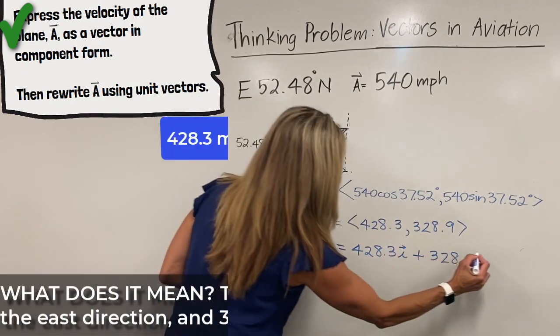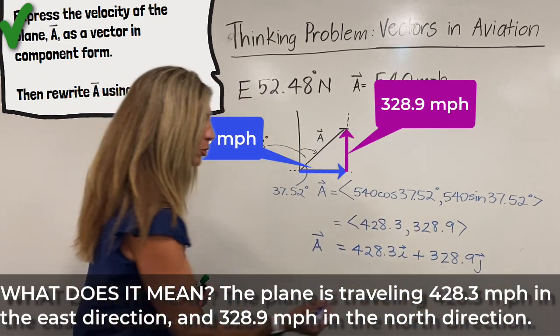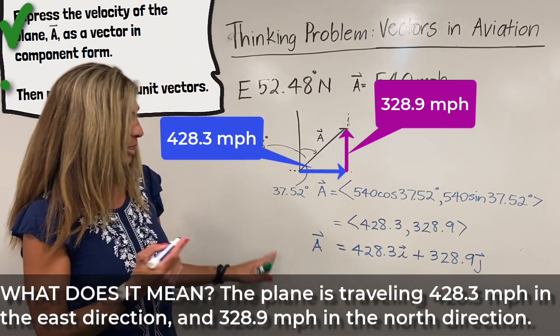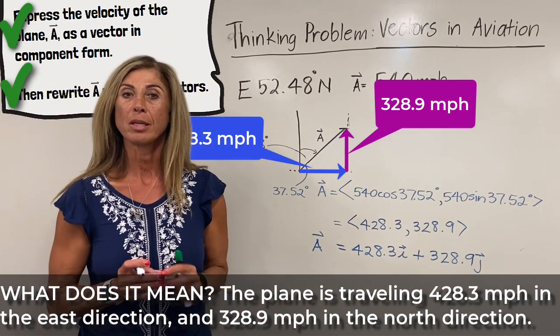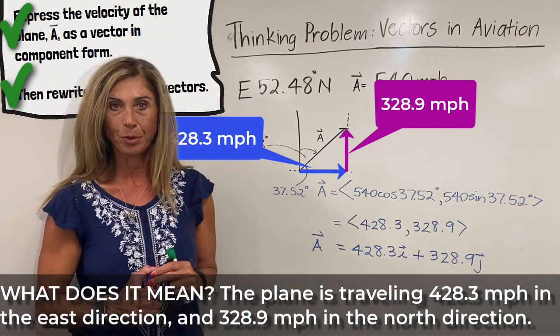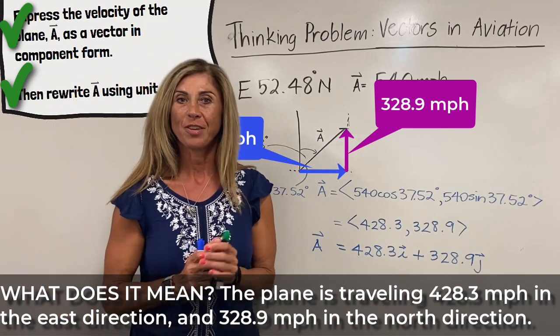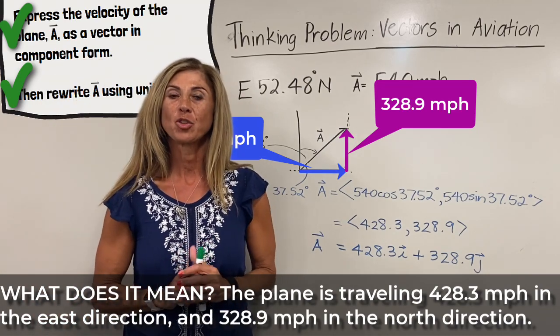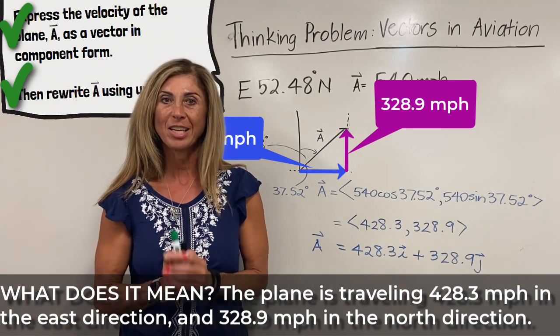We've been asked to give it in unit vector form, which translates to 428.3i plus 328.9j. I like to put arrows above our i and j — not all people do that. And there is our plane vector in unit vector component form. I hope you've enjoyed watching the video. Please make sure to like and subscribe and I'll see you next time.